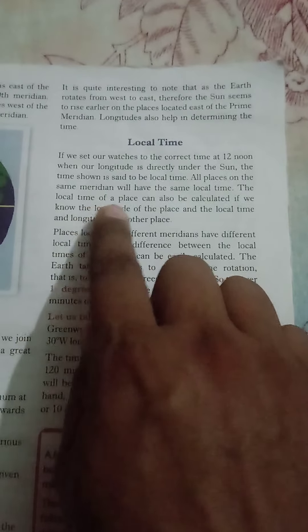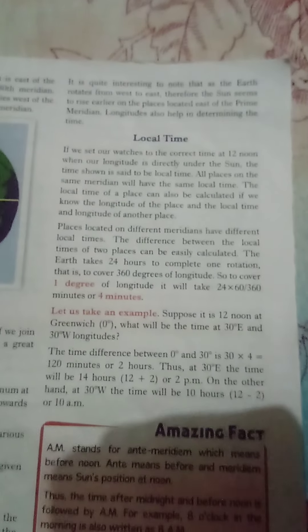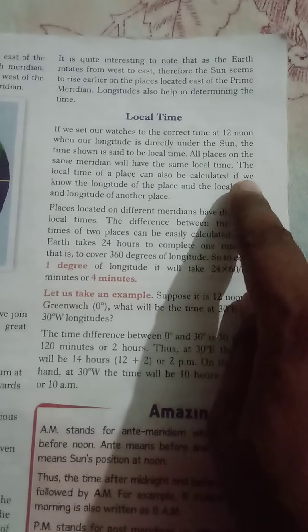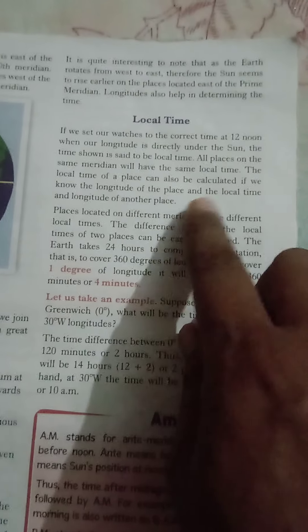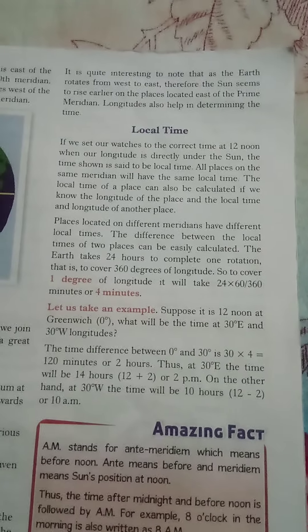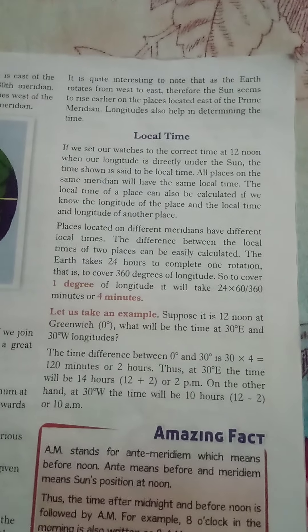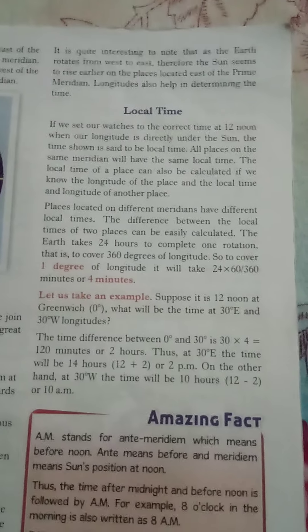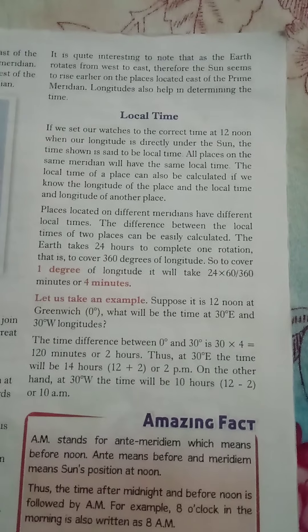The local time of a place can also be calculated. If you know the longitude of a place and the local time of another place, you can calculate the local time. Places located on different meridians have different local times.